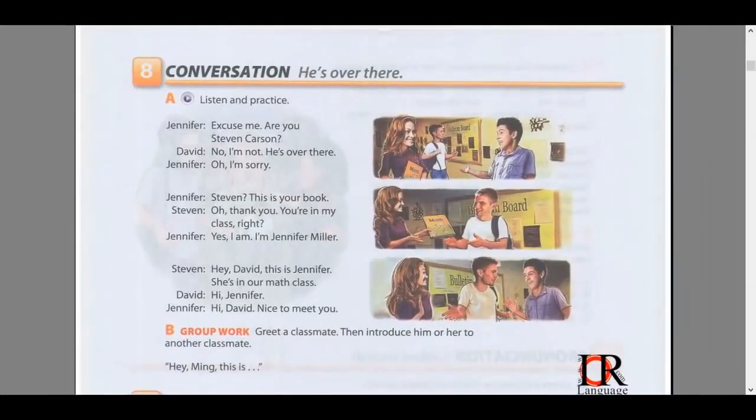Page 5, Exercise 8, Conversation: He's over there. Part A: Listen and practice. Excuse me, are you Stephen Carson? No, I'm not. He's over there. Oh, I'm sorry. Stephen? This is your book. Oh, thank you. You're in my class, right? Yes, I am. I'm Jennifer Miller. Hey, David. This is Jennifer. She's in our math class. Hi, Jennifer. Hi, David. Nice to meet you.